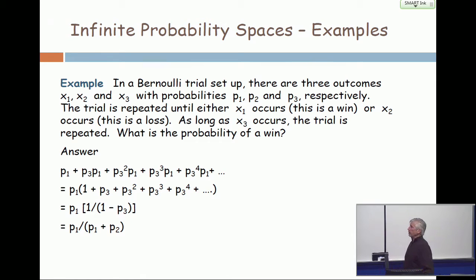And so the idea is that the experiment is repeated until you either get success or failure. And X₃ is neither. So if you get X₃, X₃, X₃, X₃, X₁, then you win. If you get X₃, X₃, X₂, then you lose. If you get X₂, you lose. If you get X₁, you win. So you repeat it until you either get a success or a failure. So there's no limit to the number of experiments because you don't know how many of the neithers you're going to get in a row to start with.